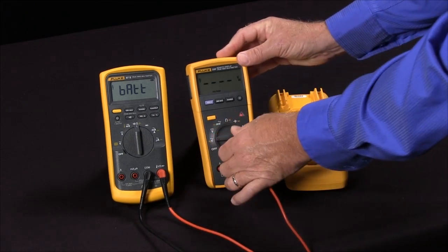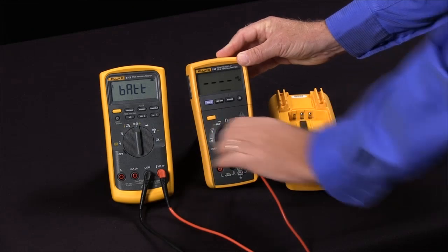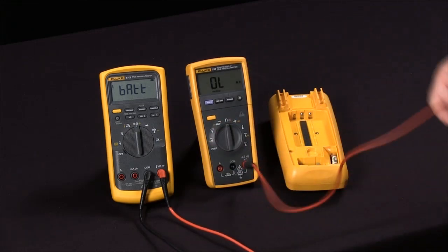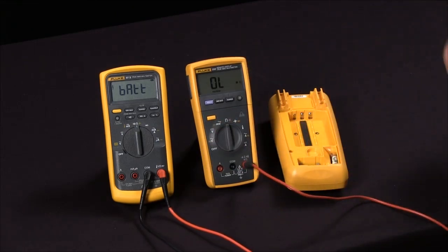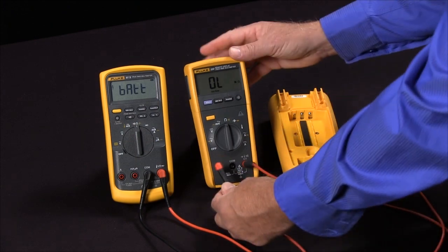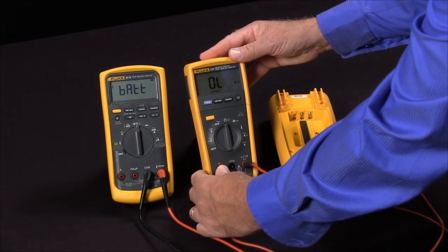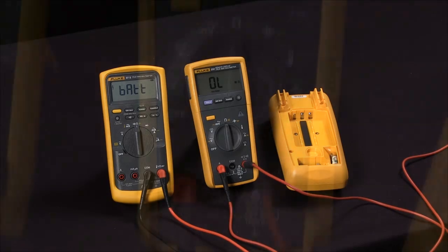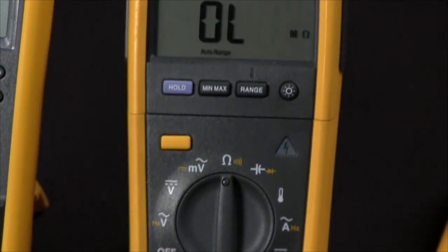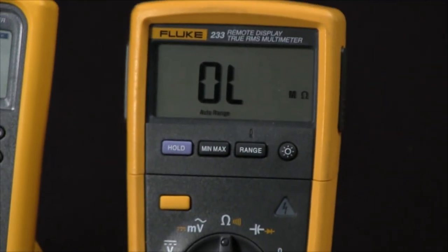So if I simply take my multimeter, change it to the ohm function, and then jump from the volt ohm jack into the amp jack, I will be measuring across the fuse and seeing its continuity. In this case, we have an open indication which says the fuse is bad in this multimeter.